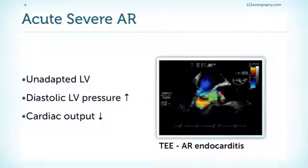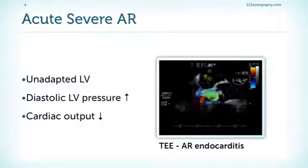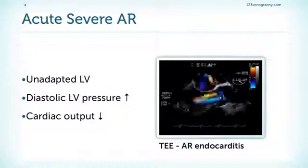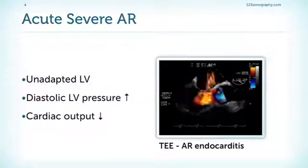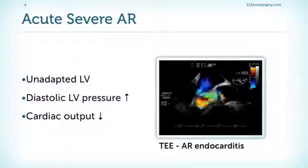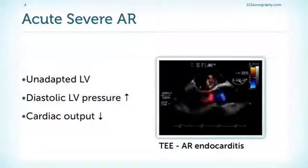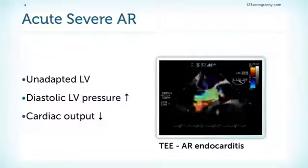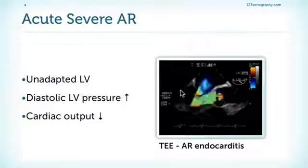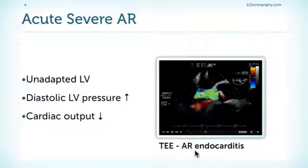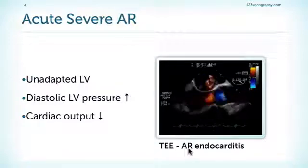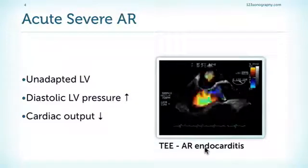In addition, we have a reduction in forward flow as the left ventricle fails, and thereby we have a reduction in cardiac output — in other words, cardiogenic shock. This is such an example where we have massive TEE caused by acute aortic regurgitation in the setting of endocarditis.